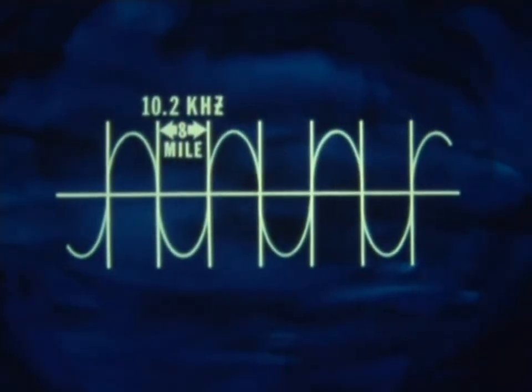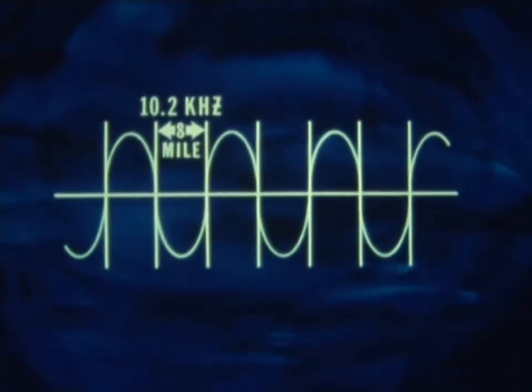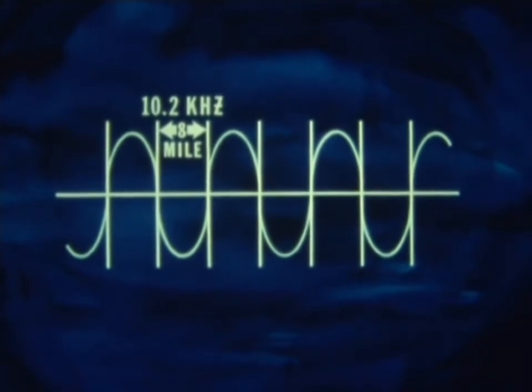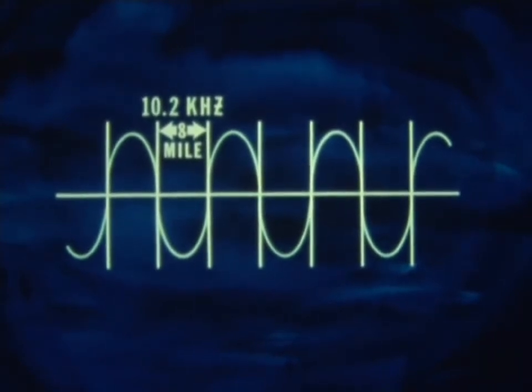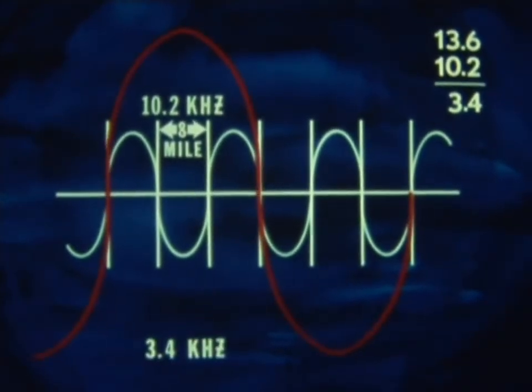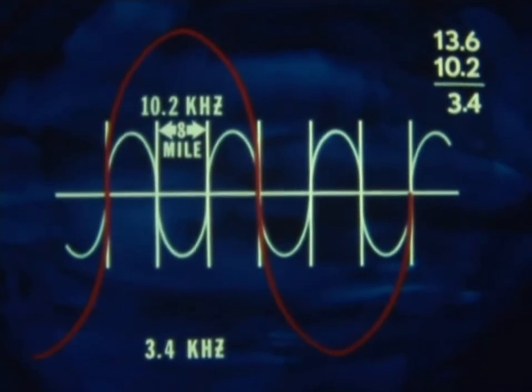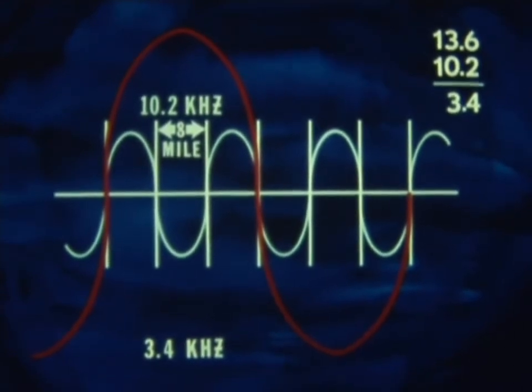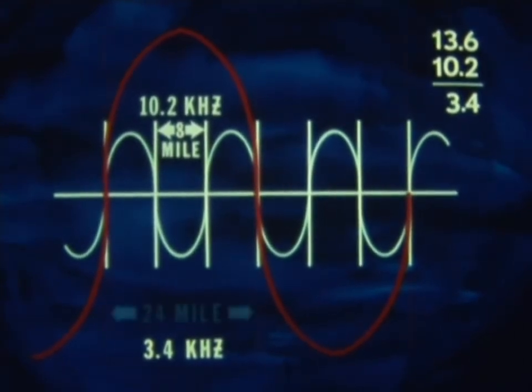In order to increase lane width, we need a lower frequency, which we obtain by having the receiver electronically take the difference between the 10.2 and the 13.6 signals, giving us a much lower frequency of 3.4 kilohertz and a lane width of 24 miles.